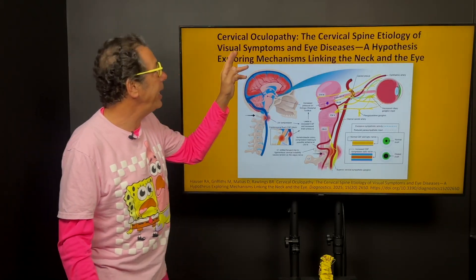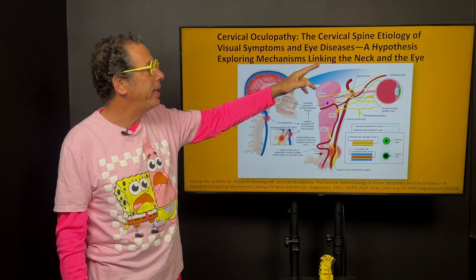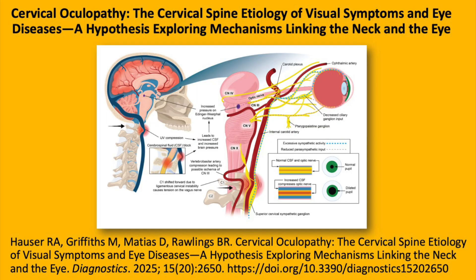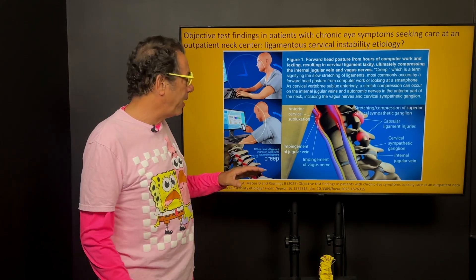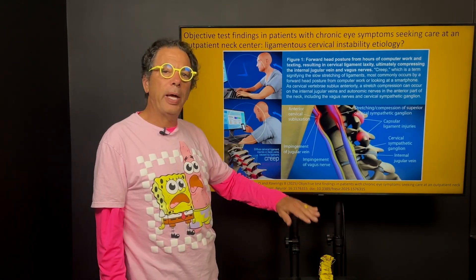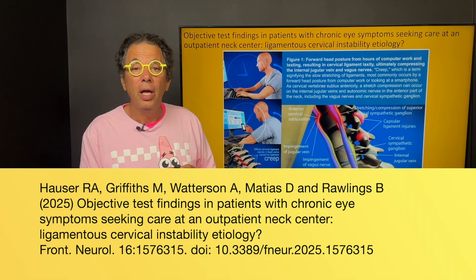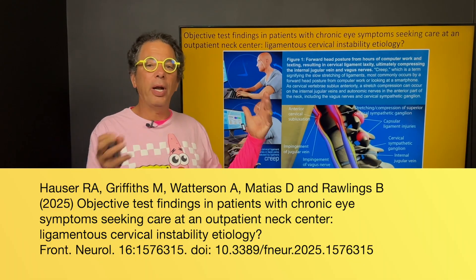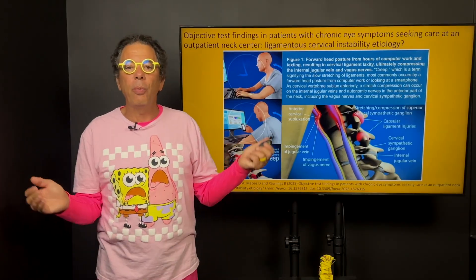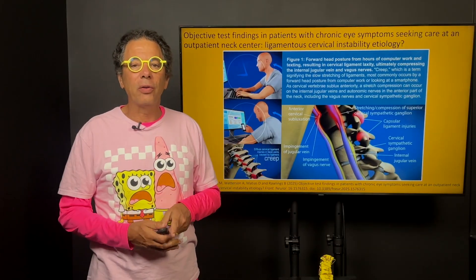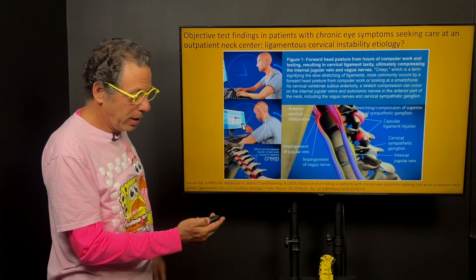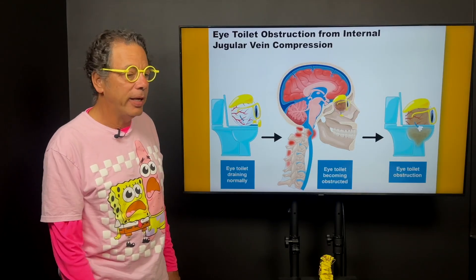The cervical spine etiology of visual symptoms and eye diseases hypothesis exploring mechanisms linking the neck and the eye. And it's published in MDPI. And then we have patient data that we described in this paper. And then my writing team decided this paper, we couldn't put everything we wanted to in that one. So we wrote what's called the long eye paper. And that's what the one in MDPI is.